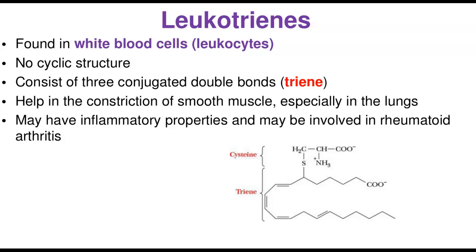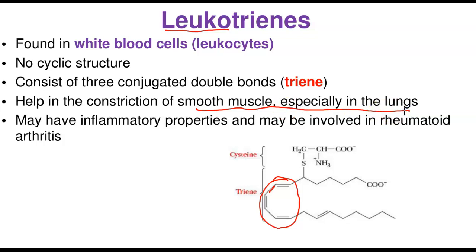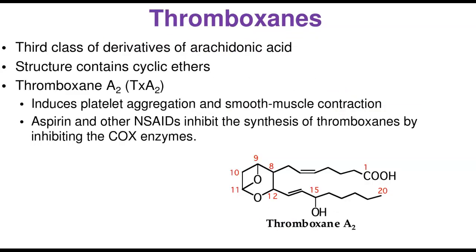Leukotrienes were first discovered in leukocytes (white blood cells), hence their name. They are not cyclic but consist of three conjugated double bonds — hence the suffix 'triene.' Their main function is contraction of smooth muscle, especially in the lungs; they can produce strong asthma-like attacks. They may also have inflammatory properties and may be involved in rheumatoid arthritis.